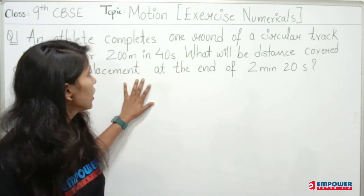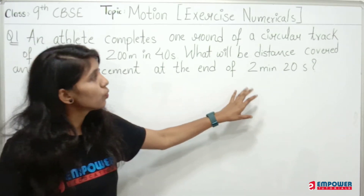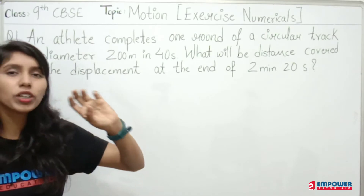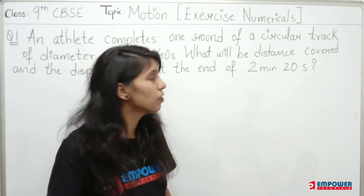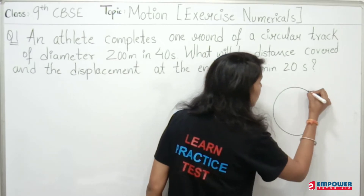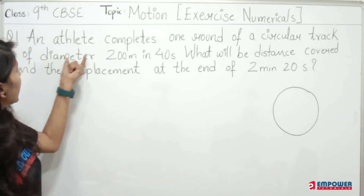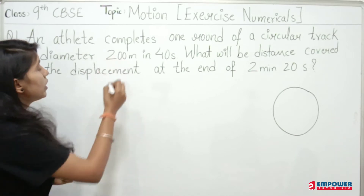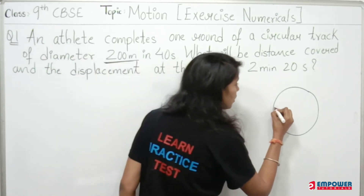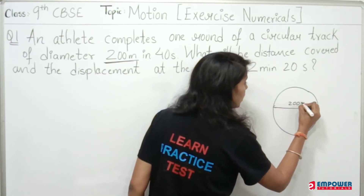We have a first question that says: an athlete completes one round of a circular track. Here is the term of circular track, so what are we going to do? We will draw a circular track. The circular track has a diameter of 200 meters. So how much diameter is given? 200 meters.